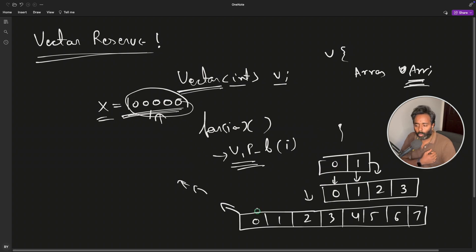So how you do that? After creating vector of integer v, you just say v.reserve that x number. Now this was a happy part.